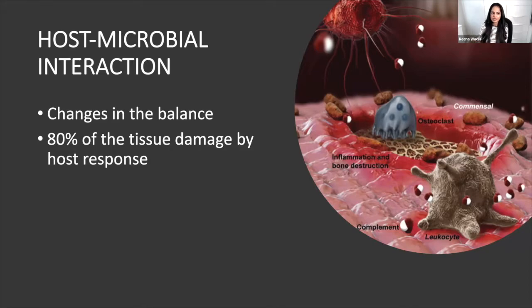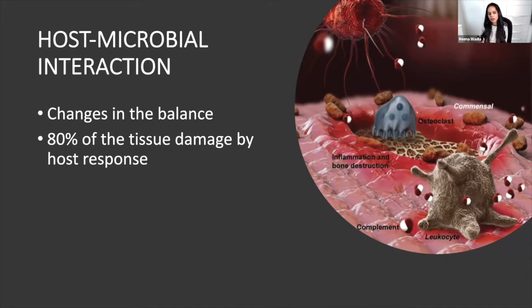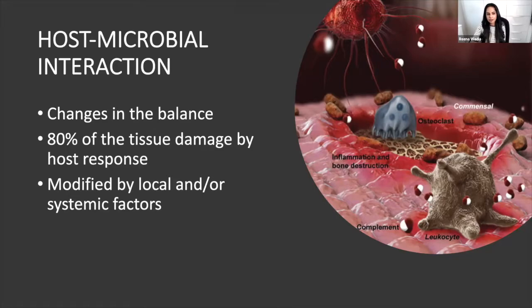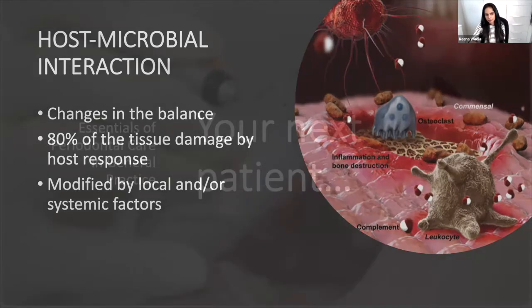The key thing is the balance between the host and the microbial microbiome — it's when that balance is disrupted that you get disease. An interesting statistic is that 80% of the tissue damage is actually because of the host response, not the bacteria. Perio is a really unfair condition — some people don't brush their teeth and they're fine, while others look after their teeth and still have severe disease. It's all about the host, genetics, and the way the host is modified by local or systemic factors.